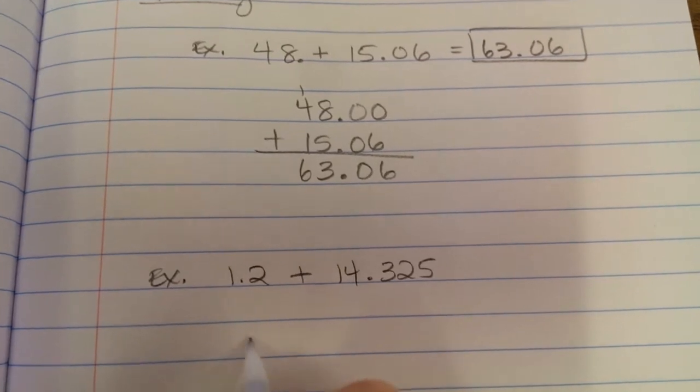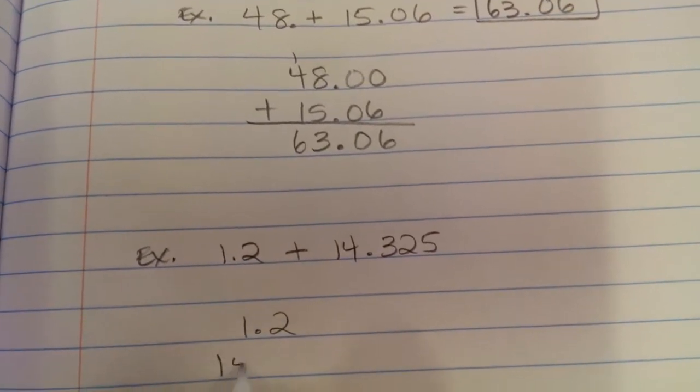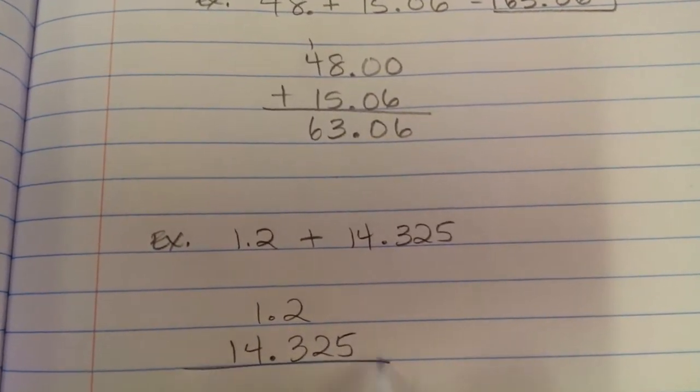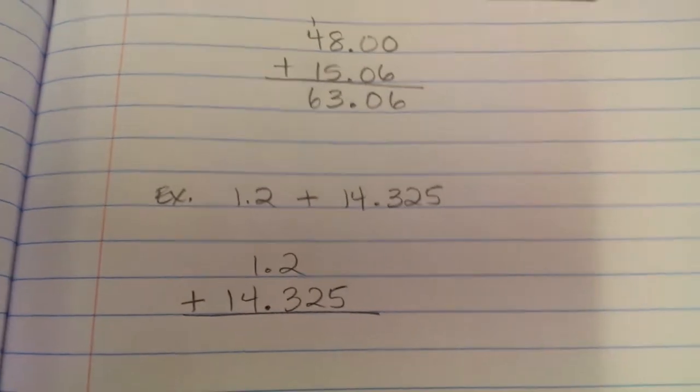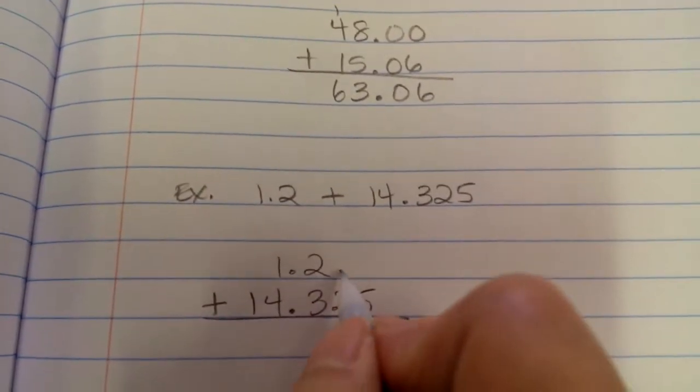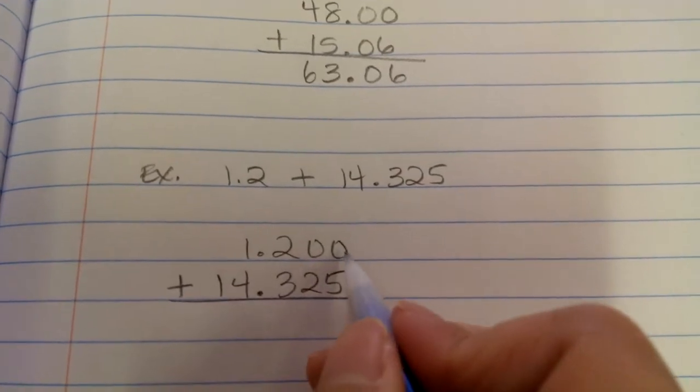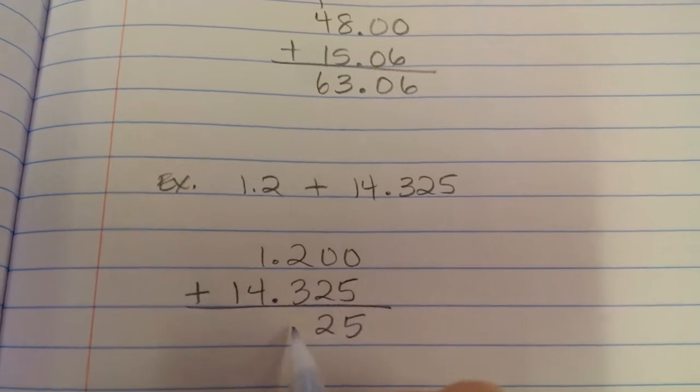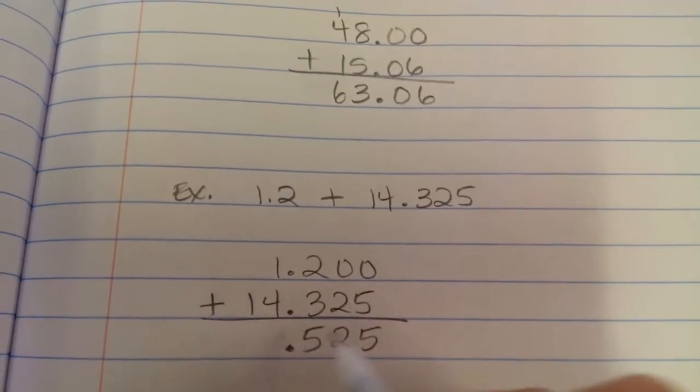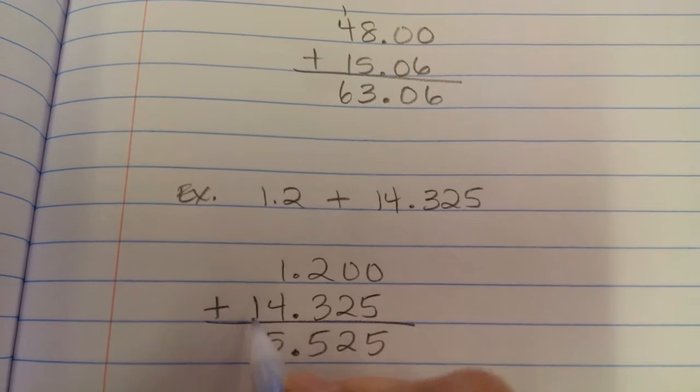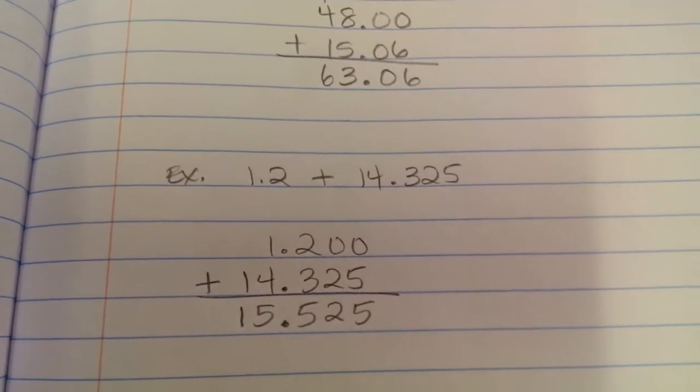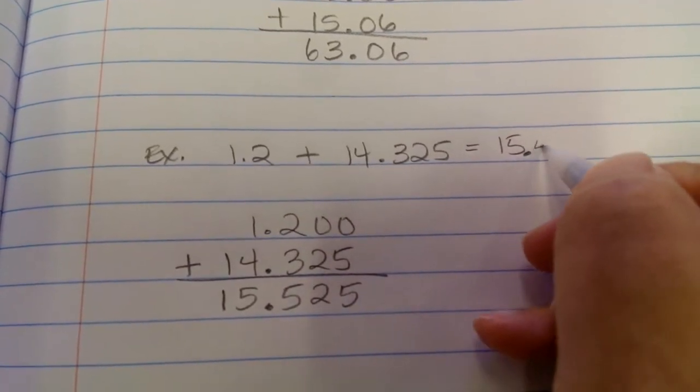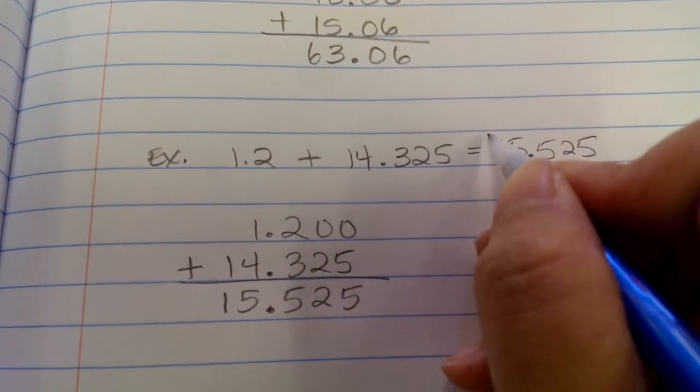So again, we're going to line up the decimals. Make sure the decimals are lined up. And your numbers should be lined up too. We're going to add. Now, if we don't see any numbers above, what do we put? Zeros. Now we add. 0 plus 5 is 5. 0 plus 2 is 2. 2 plus 3 is 5. Bring down the decimal. 1 plus 4 is 5. And 0 plus 1 is 1.